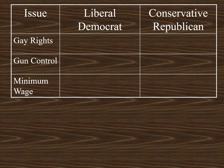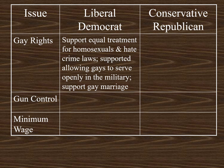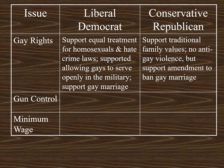Here are three more issues that divide Democrats and Republicans, starting with gay rights. Liberal Democrats support equal treatment for homosexuals under the law. For example, if a gay couple wanted to adopt children, they would support that; if someone was fired from their job because they were gay, they would say that's an unlawful firing. Liberal Democrats worked to make sure that homosexuals were allowed to serve openly in the military, and they pushed to legalize gay marriage. Conservative Republicans support traditional family values — a traditional family headed by one man and one woman. They would be completely opposed to violence against homosexuals, but many conservative Republicans have supported a constitutional amendment to ban gay marriage.